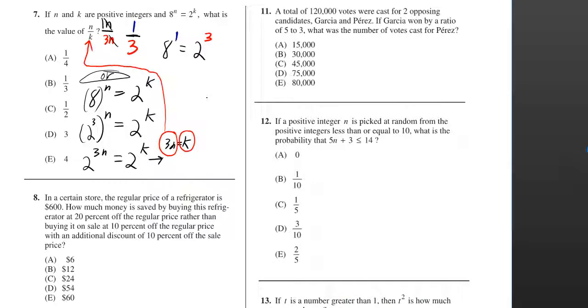If n and k are positive integers and 8 to the n is equal to 2 to the k, what is the value of n over k?